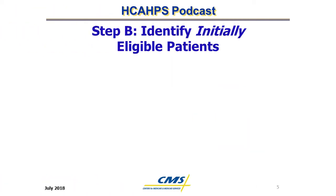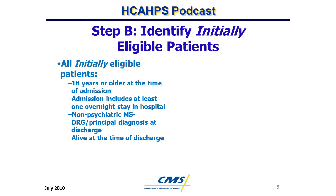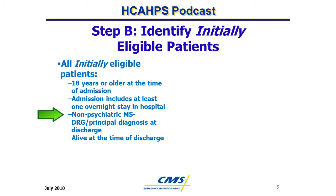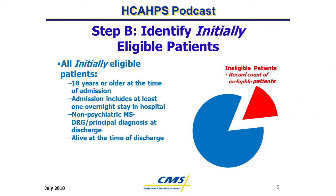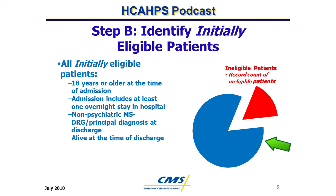Step B: Identify initially eligible patients. For a patient to be identified as initially eligible for H-CAPS, certain criteria must be met: 18 years or older at the time of admission, at least one overnight stay in the hospital, a non-psychiatric MS-DRG or principal diagnosis at discharge, and alive at the time of discharge. Patients not meeting these criteria are removed from the population, represented by the red slice of the circle. The remaining blue part represents those patients considered initially eligible.